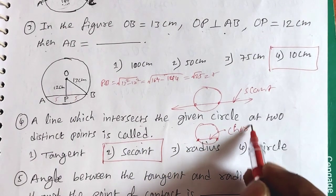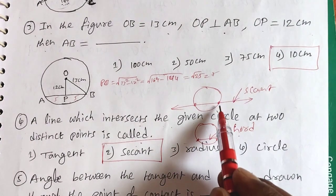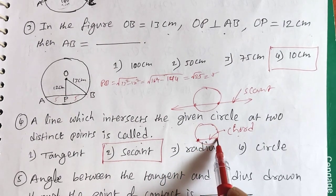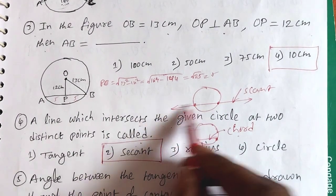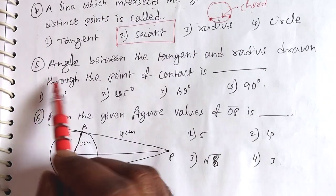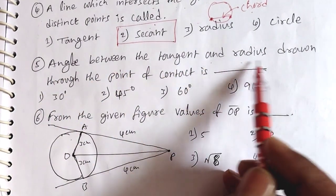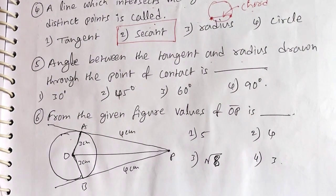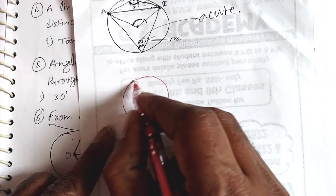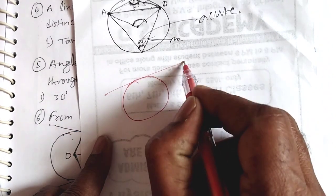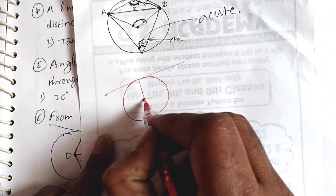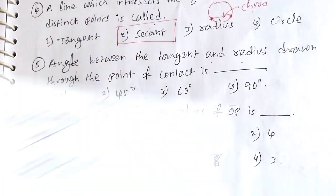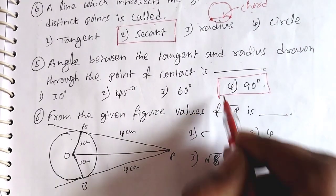Question 5: The angle between the tangent and the radius drawn through the point of contact. Here is the circle with the tangent. Here is the center of the circle, and here is the radius drawn to the point of contact. The angle between the radius and the tangent is 90 degrees. So the fourth option, 90 degrees, is the answer.